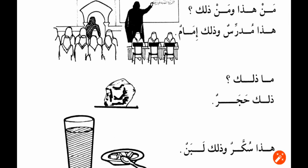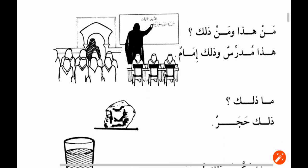Hajarun means stone. That is why when you go to Makkah you say Hajarul Aswad — the black stone. Ashwad means black, and hajarun means stone. Ma dalika? Dalika hajarun — that is a stone.